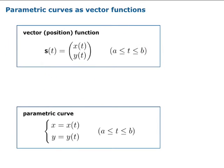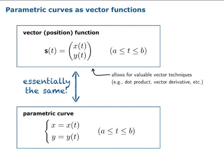Vector position functions and parametric curves are really the same thing. So one could ask, quite fairly, why would you bother having two different ways of looking at it? When you think of these as vector functions, you can use all sorts of powerful tools, which we have yet to see in some cases, like the dot product and the vector derivative. Very powerful tools that allow you to analyze your curve.